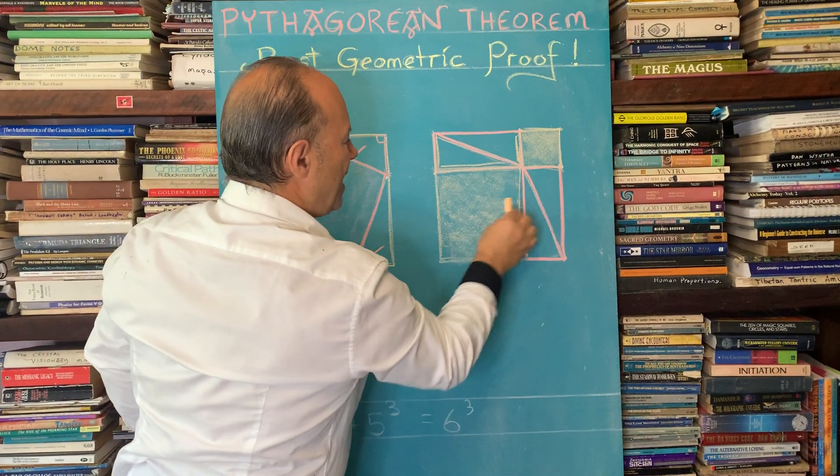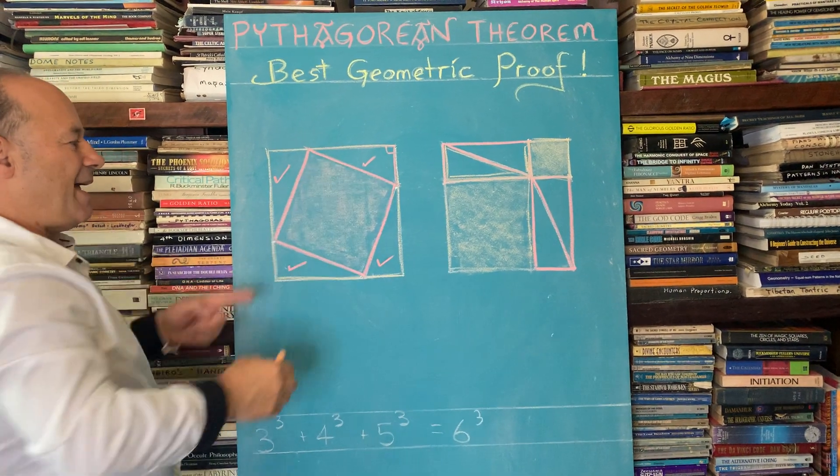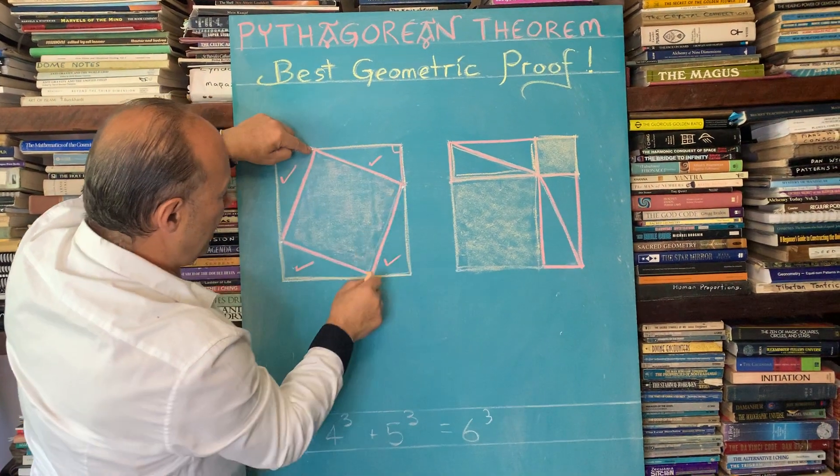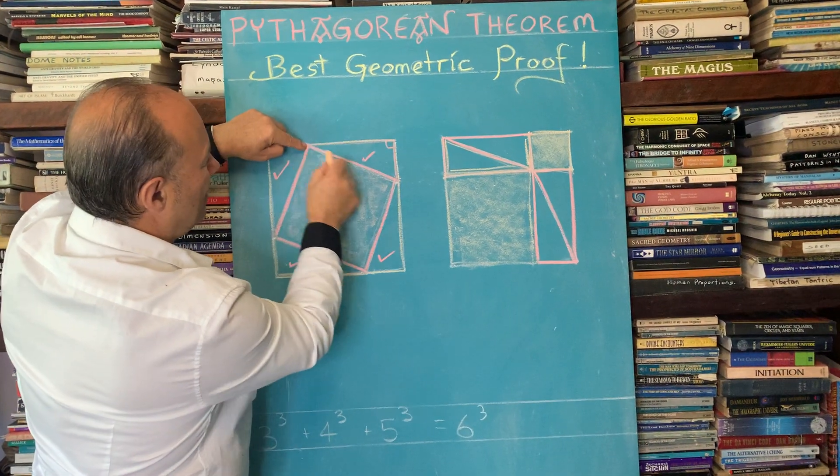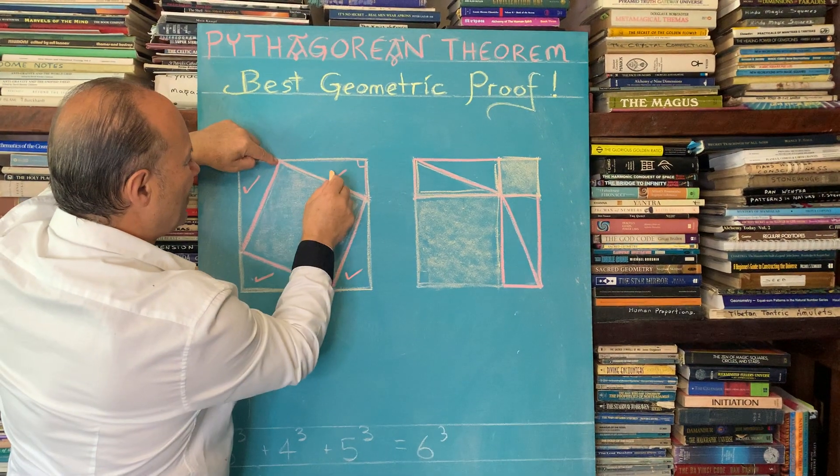But did you notice that this area here is identical to the area here? Because this square here is the hypotenuse, which is the longest side.